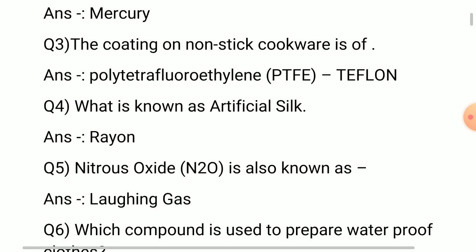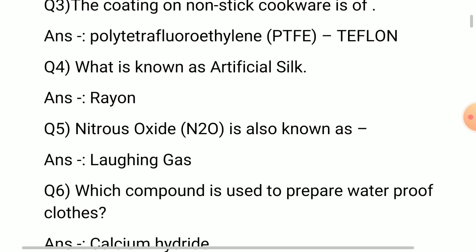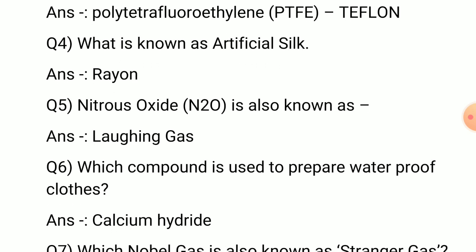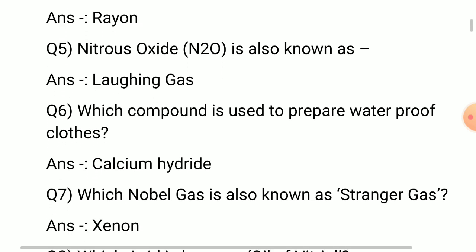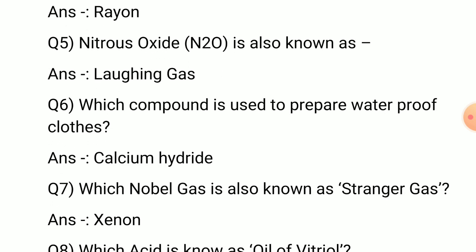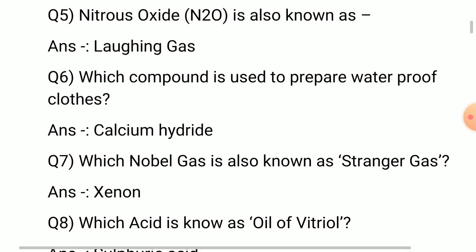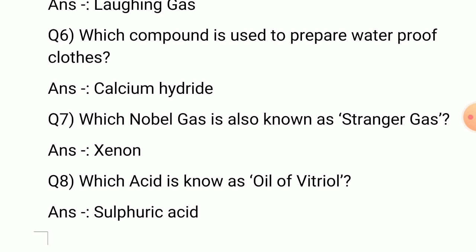Rayon. Question number 5: Nitrous oxide, N2O, is also known as? Answer: Laughing gas. Question number 6: Which compound is used to prepare waterproof clothes? Answer is calcium hydride.